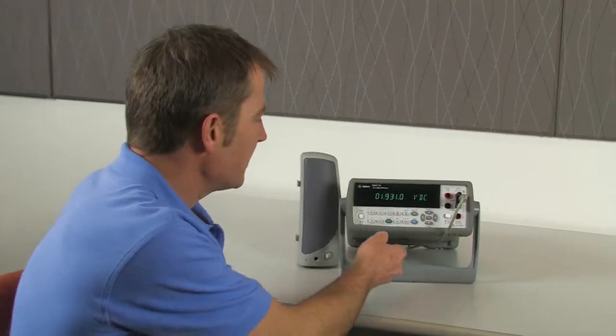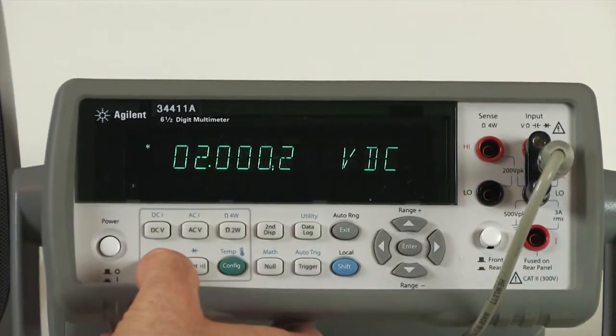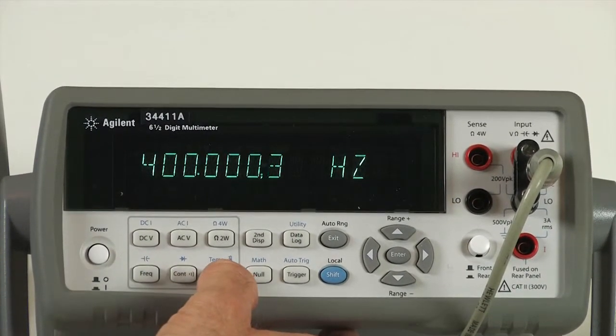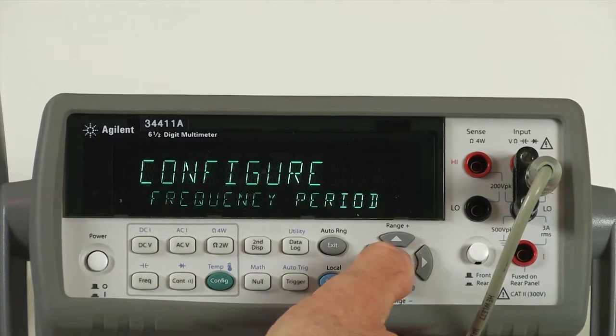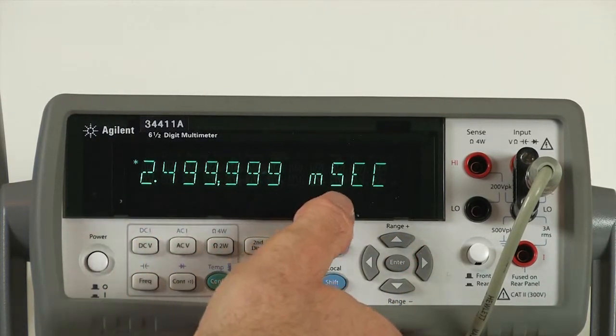So the first step is to determine the frequency of the noise. So I'm going to use the built-in frequency counter in the DMM. As you can see, it's 400 Hertz, or let's look at the period. The period is 2.5 milliseconds.